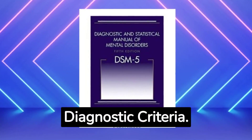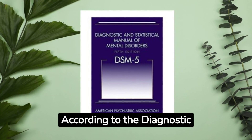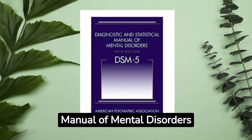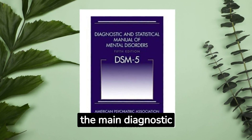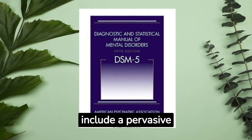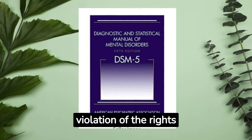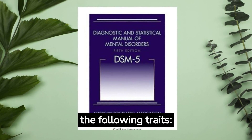Diagnostic Criteria: According to the Diagnostic and Statistical Manual of Mental Disorders, DSM-5, the main diagnostic criteria for APD include a pervasive pattern of disregard for and violation of the rights of others since the age of 15, as well as the presence of at least three of the following traits.